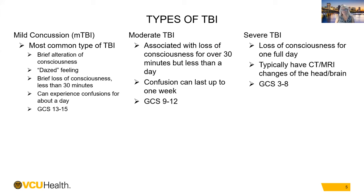Looking at types of TBI — there are several different types. Mild TBI is usually a mild concussion; it's the most common type, with a brief alteration of consciousness — loss of consciousness less than 30 minutes. Patients may have a dazed feeling, can experience confusion for about a day, and that GCS ranges usually 13 to 15.